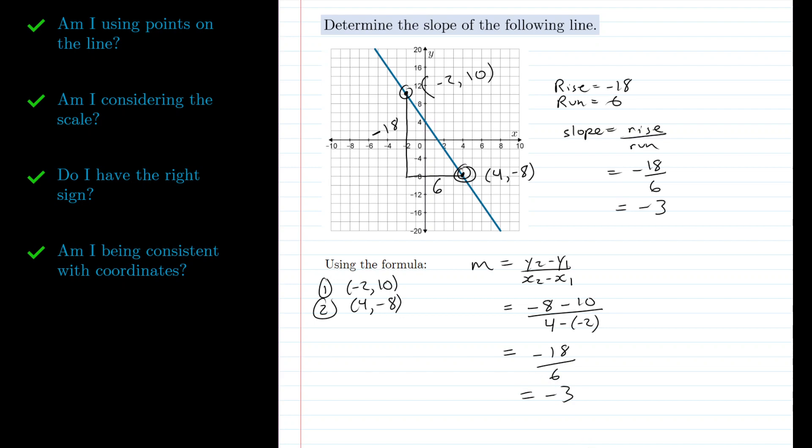So that's it. Make sure you're using points that are on the line. Now of course if you're given the points in the problem that's not going to be an issue. It's really if you're reading it off of a graph. Make sure you're paying attention to the scales involved. Make sure you have the right sign and also make sure that you are being consistent with coordinates. And that is it.